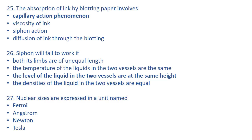Siphon will fail to work if the level of the liquid in the two vessels is the same height. That is the right answer, option C. The other options — unequal limb lengths, same temperature, and equal densities — do not cause the siphon to fail.